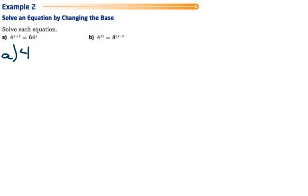We're not going to touch the 4 to the x plus 2, but 64 will become 4 cubed. That had an exponent of x on it, we're going to keep that there. We'll take that and simplify it. 3 times x would be 3x.